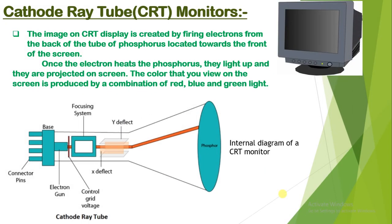First is cathode ray tube monitors — CRT monitors. As you can see, this is the figure of a CRT monitor. These were the traditional systems which were used in computers.